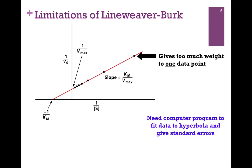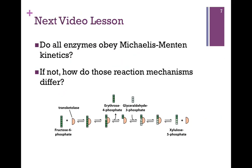The best way is to use a computer program, fit the data to a hyperbola, and then we can get standard errors and a better measure of Km, Vmax, and our margin of error. In our next lesson, we'll see that not all enzymes obey Michaelis-Menten kinetics. Remember, we've made some simplifying assumptions, so we want to look at those cases that do not obey Michaelis-Menten kinetics and see how they differ from those that do.